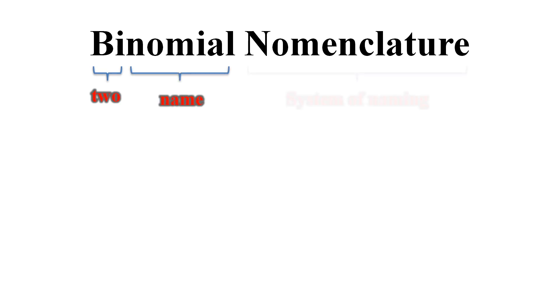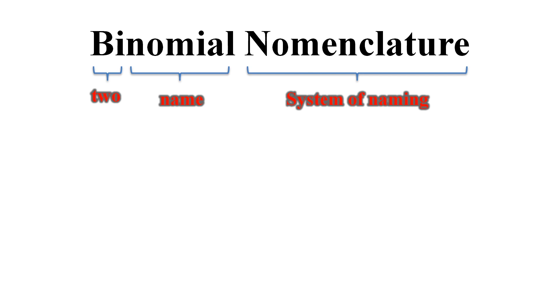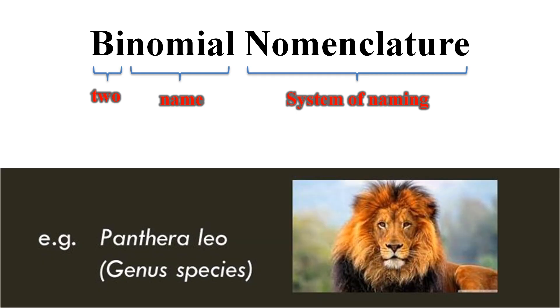Binomial nomenclature. Bi means two, nominal means name and nomenclature means system of naming. Carl Linnaeus came up with this system of naming where every organism is given a scientific name for it to be identified easily. The first part of the name is genus of the organism while the second is species. For example, Panthera leo. Panthera is the genus of lion while leo is its species. So the scientific name of a lion is Panthera leo.